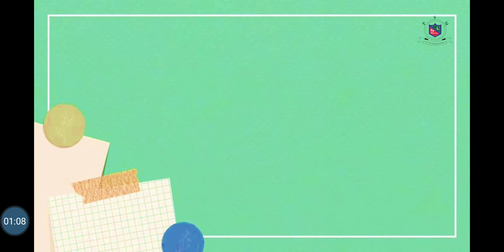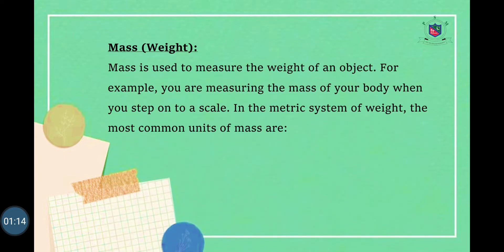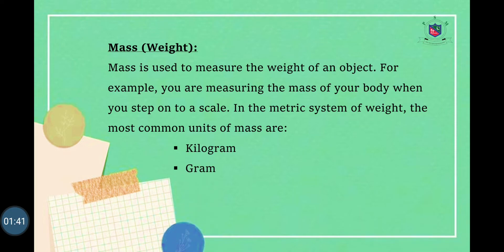First of all we have to learn what is mass or weight. Mass is used to measure the weight of an object. For example, you are measuring the mass of your body when you step onto a scale. In the metric system of weight, the most common units of mass are: kilogram, which is used to measure the weight of fruits and vegetables; gram, which is used to measure small things like a paper clip; and milligram, which is the smaller unit and is used to measure mostly medicines.